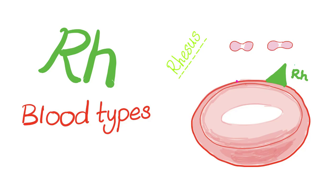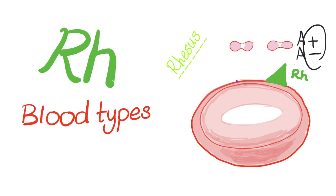After discussing ABO blood groups in the previous video, now it's time to talk about the RH blood types. RH stands for rhesus antigen or rhesus factor. It's an antigen on the surface of the red blood cell, like the ABO system, but a completely different system. That's how we know if you are positive or negative — for example, are you blood group A positive or A negative? That's the RH system.